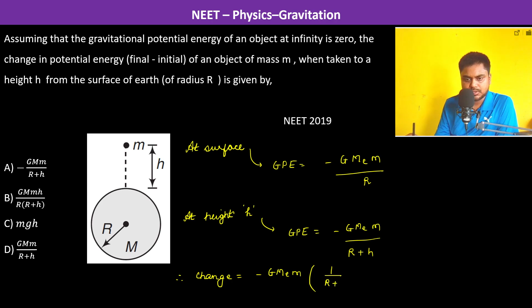One upon R plus h minus one upon R. So this is the final gravitational potential minus the initial. So this is equal to minus G M_e m times R minus R minus h divided by R times R plus h.